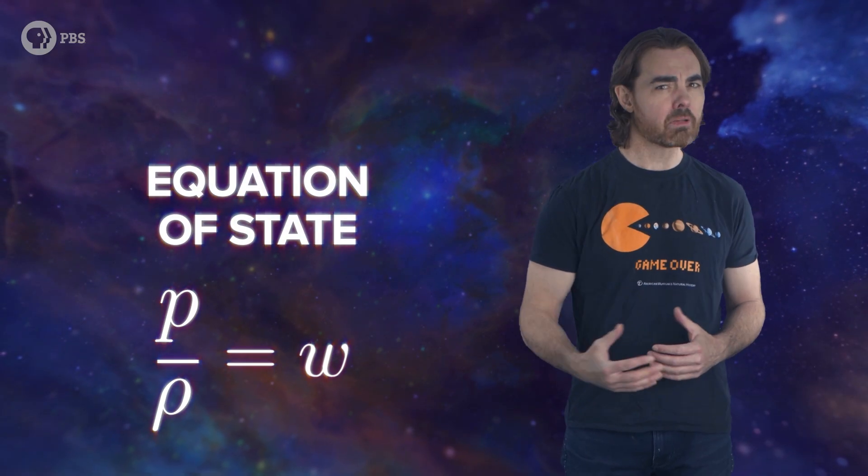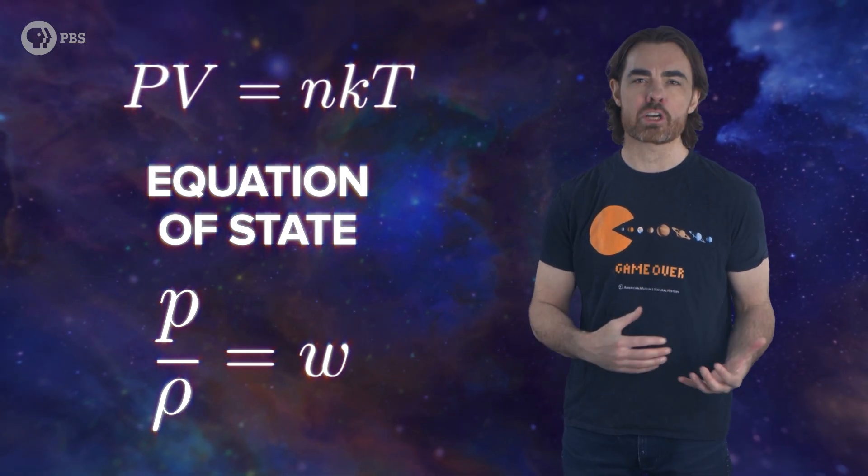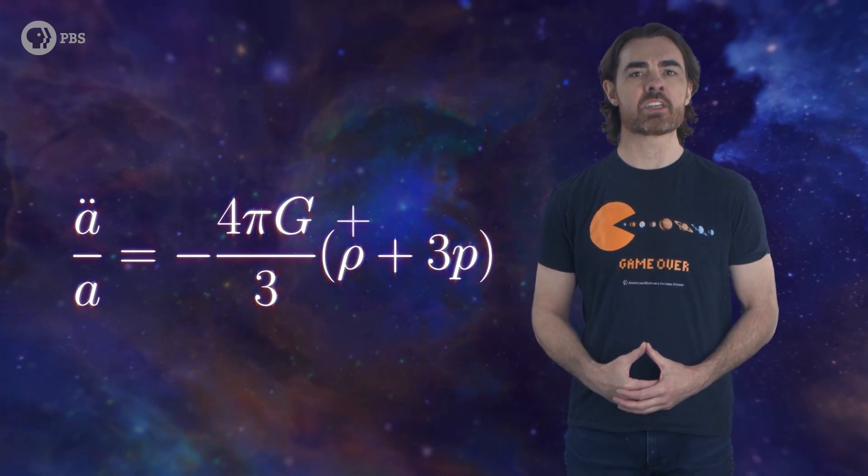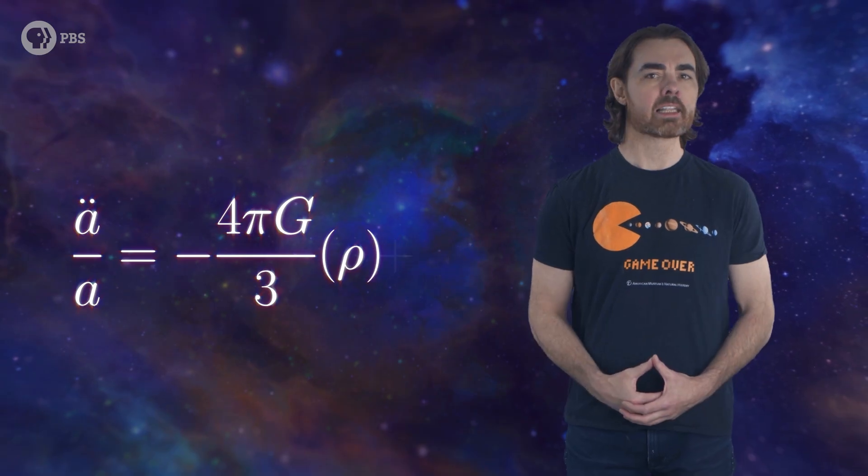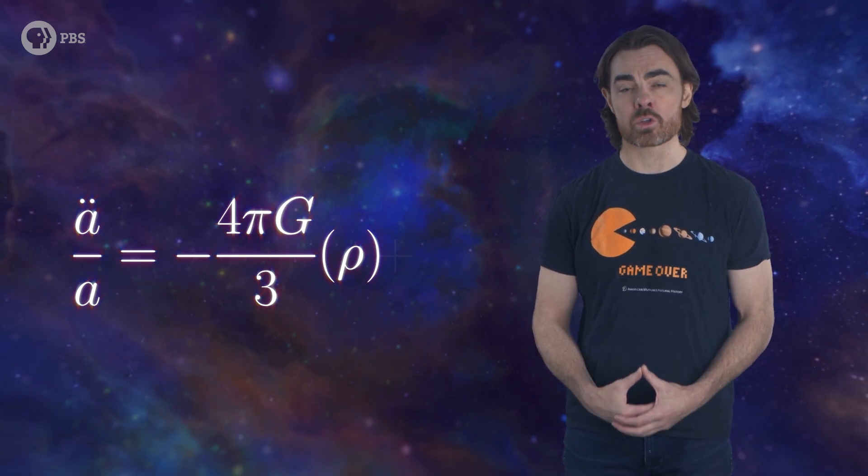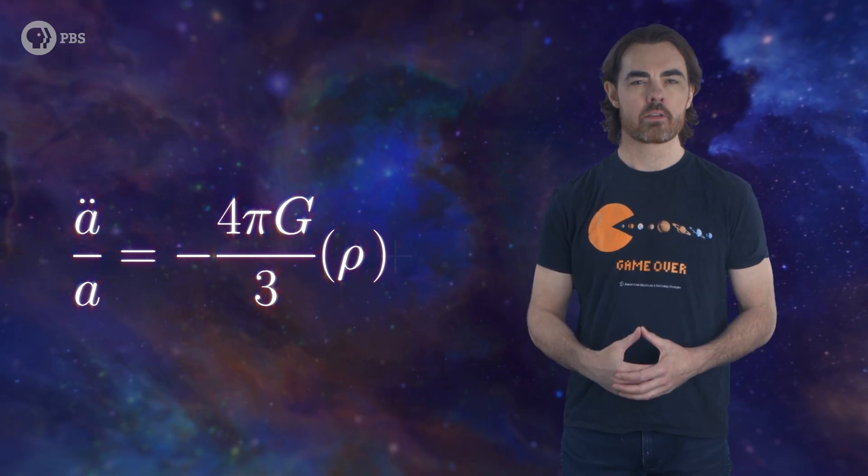The ratio pressure over density is basically zero. By the way, in cosmology we call this ratio, pressure over density, the equation of state. It's a simplification of the good old equation PV equals NKT relating pressure, volume, temperature, and the amount of stuff. Anyway, the upshot is that positive energy density and no real pressure leaves the right side of the equation negative. So negative acceleration. Matter on its own can only cause deceleration of the expansion rate. What goes up must come down.